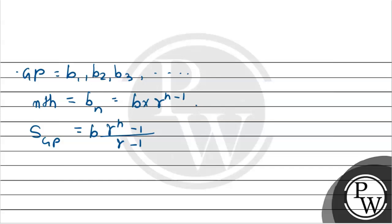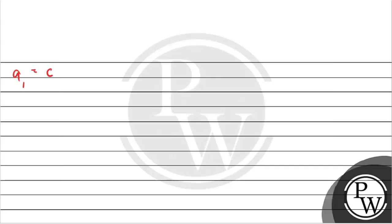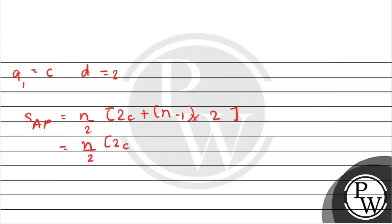Now let's look at the solution. First we calculate the arithmetic progression. We have a1 = c, a2 = c+2, and a3 = c+4. The sum of the first N terms is S_AP = N/2 · [2c + (N−1)·2], which simplifies to N/2 · (2c + 2N − 2), equal to N(c + N − 1).